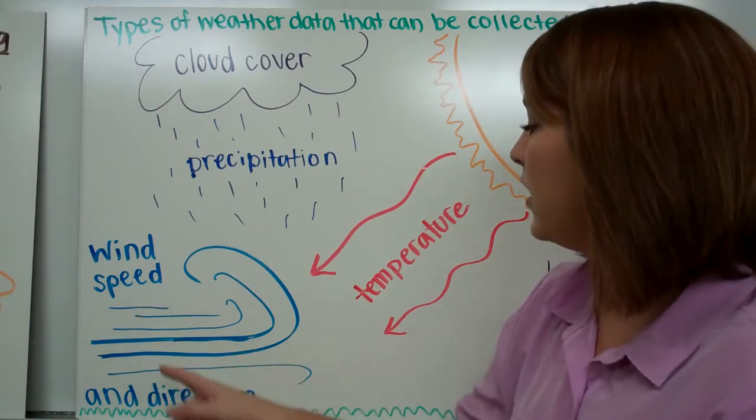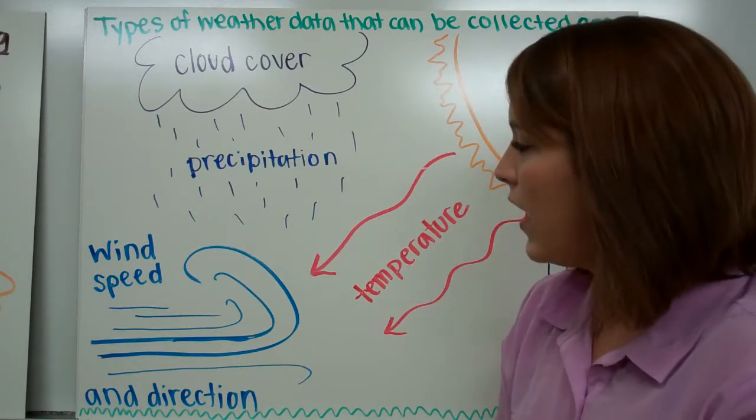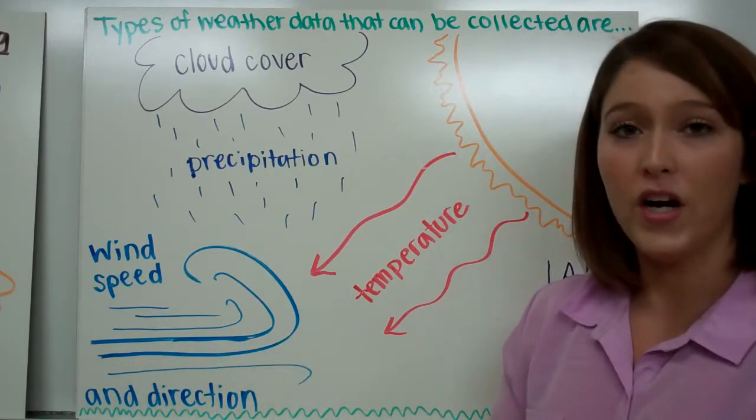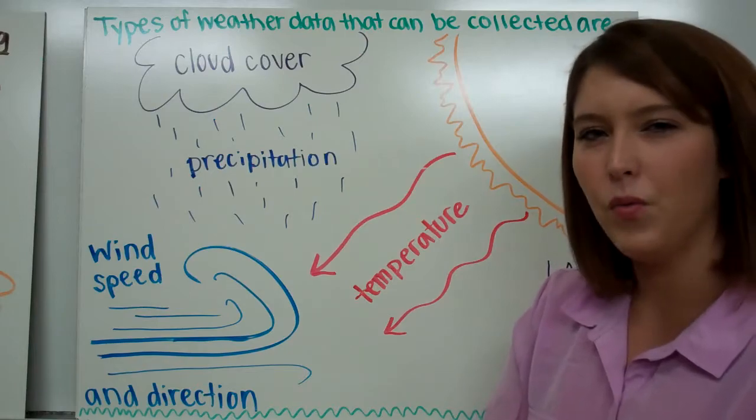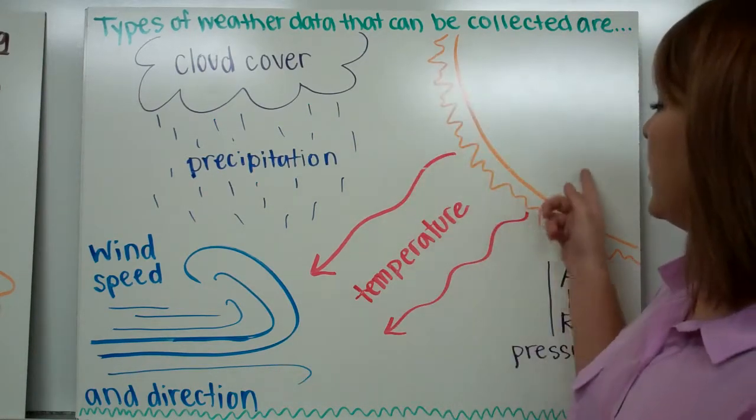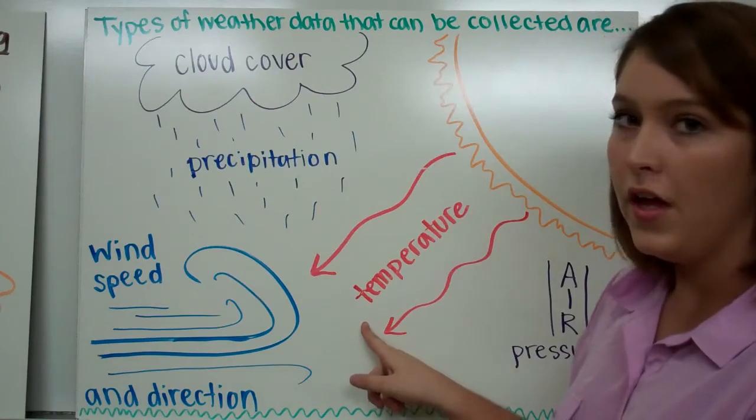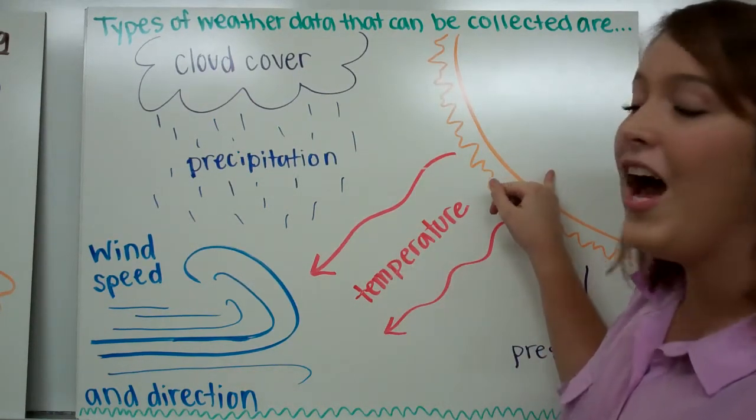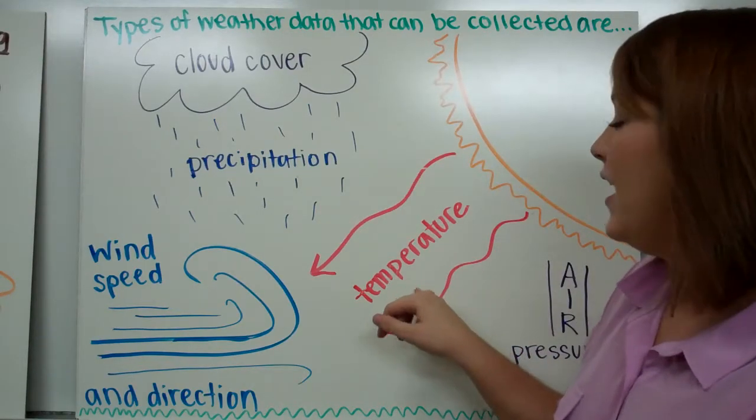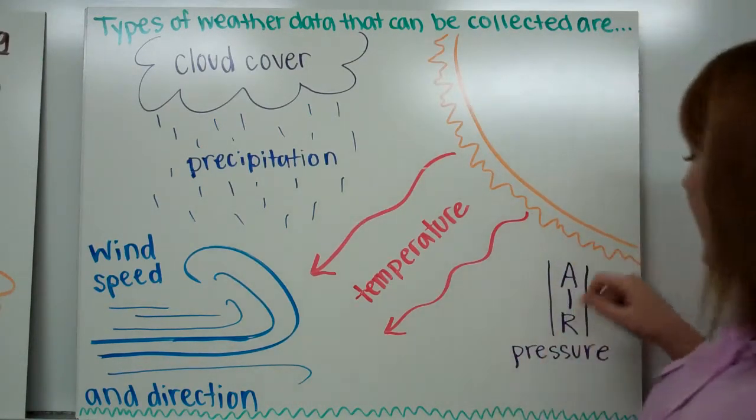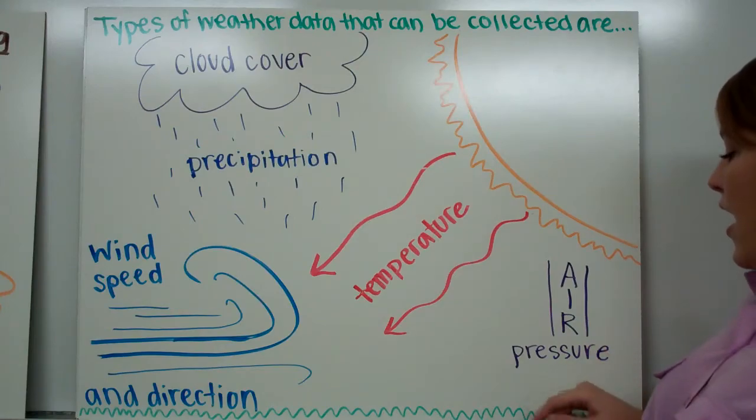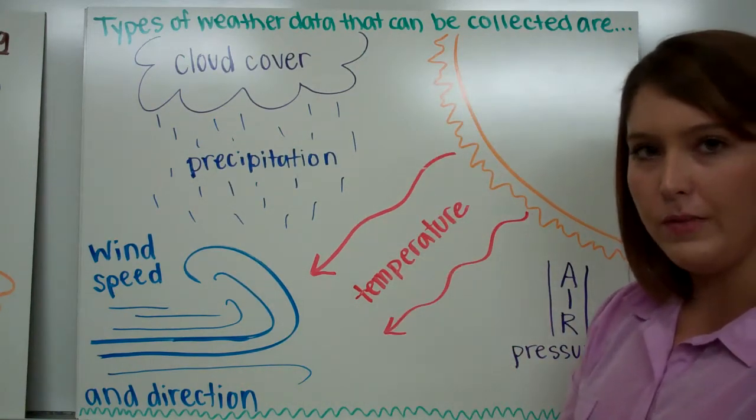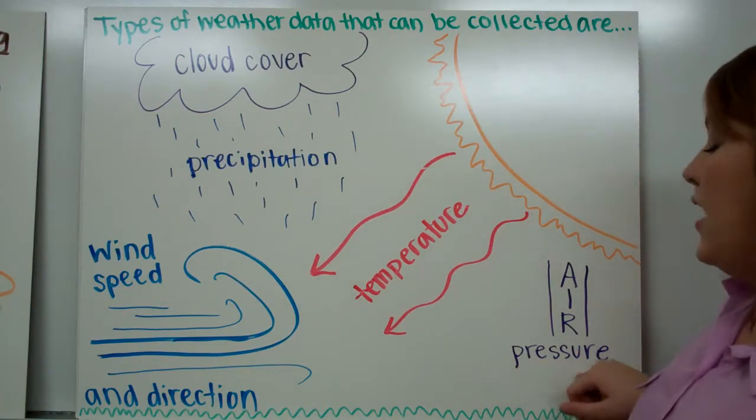Another type of weather data that we can collect is wind speed and direction. We can look at and observe where wind is coming from and where it's going, as well as how fast the wind is moving in our atmosphere. We can also consider temperature on Earth, the temperature of the air around us, which is dependent on how much solar energy is in our atmosphere. We can also consider air pressure. Air pressure is the weight of the column of air above a person or an object.